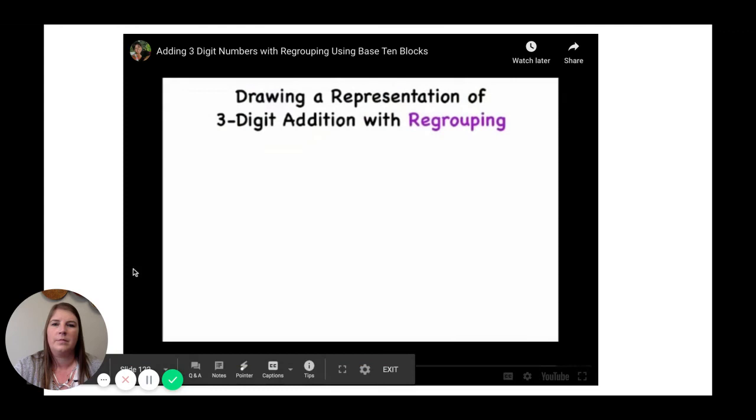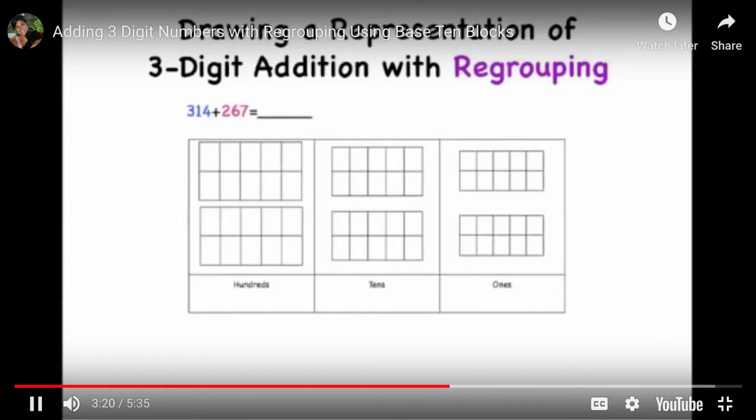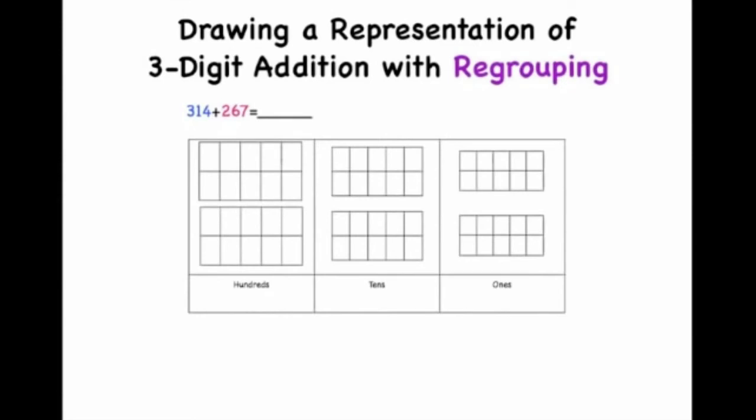Next, let's draw a representation of a three-digit addition problem with regrouping. Let's look at the equation 314 plus 267. We'll start by drawing the number 314 using blue. 314 has three hundreds, one ten, and four ones. Next, let's draw 267 using pink. 267 has two hundreds, six tens, and seven ones.